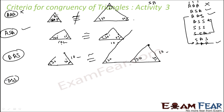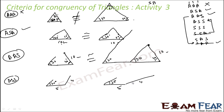Next is ASS — angle and then two sides. Let's say the angle is 30 degrees, one side is 5 cm, and another is 4 cm. Drawing another triangle with the same 30 degrees and 4 cm at a different angle — you can actually draw two non-congruent triangles with angle-side-side. So ASS does not guarantee congruence.